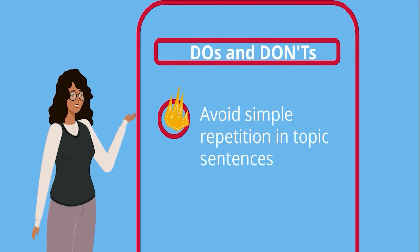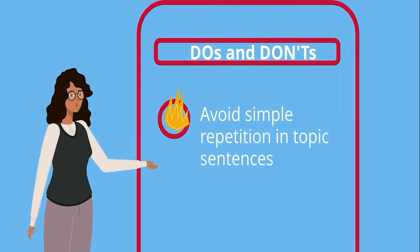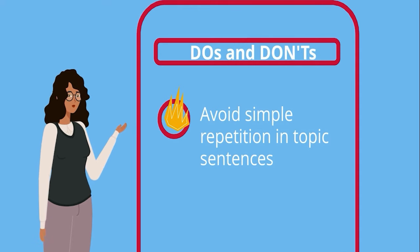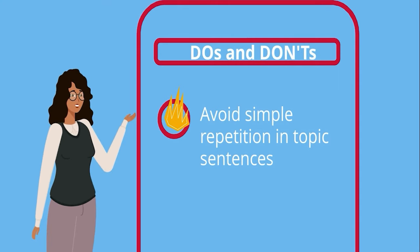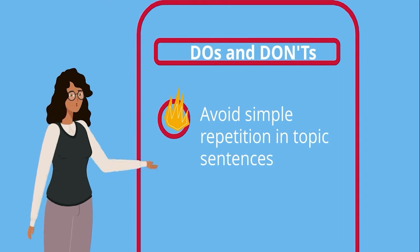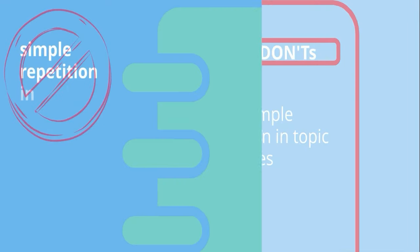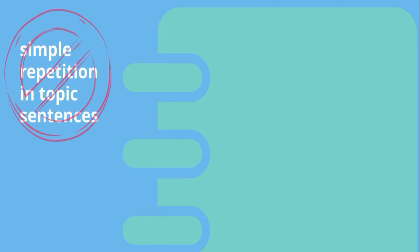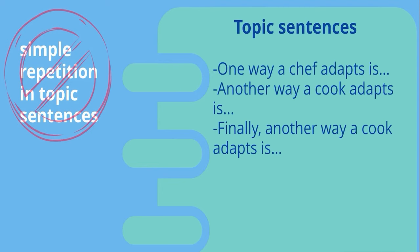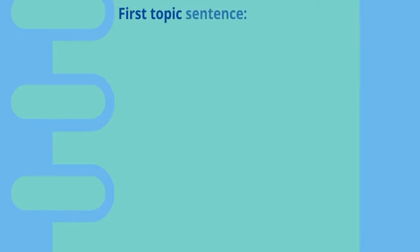The last tip is to avoid repetition that's excessively simple. While it's a good idea to repeat the main point of the thesis, do so using different words. For example, we see that the topic sentences all start the same way, and while it's clear to the reader what's being expressed, it's too simplistic and repetitive. You want to repeat the idea of adaptability, but by using different words.